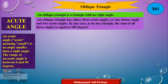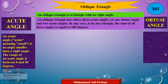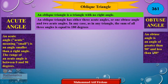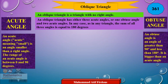Another word used is obtuse angle. An obtuse angle is an angle greater than 90 degrees and less than 180 degrees. So an obtuse angle is bigger than an acute angle.